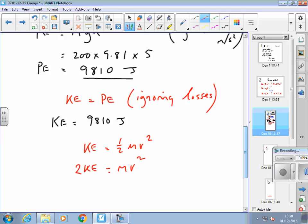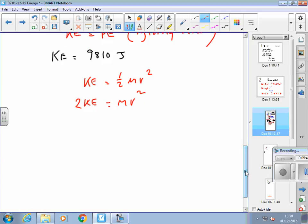And then divide by M. So now I've got V squared on its own. Finally I square root the answer.